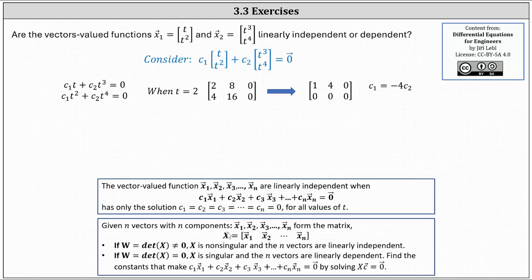we form the matrix X where the columns are x1 through xn and then we find the determinant of matrix X, which is the Wronskian.